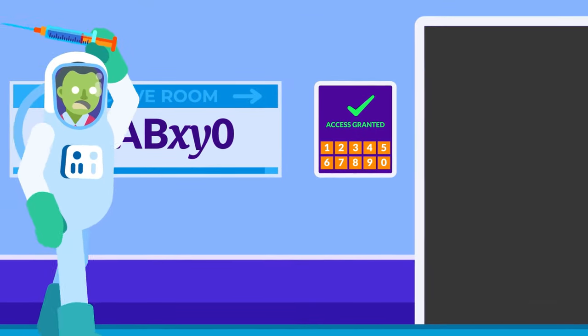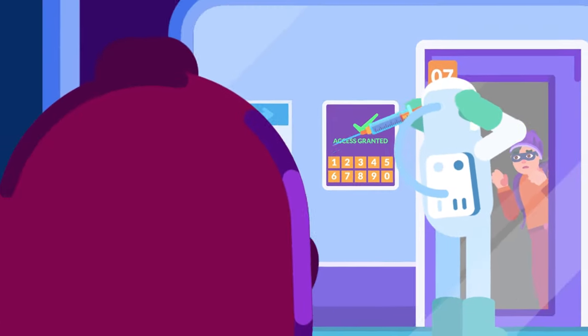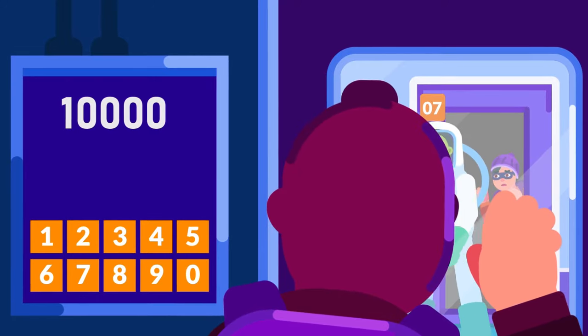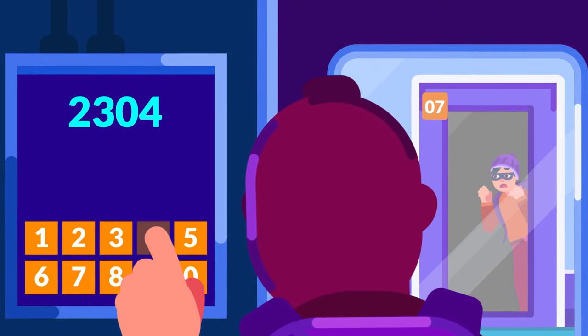Number 3: Zeros may be at times considered insignificant depending on its location and the presence of a decimal point. Any zero between two significant figures is significant. Thus, 2304 has four significant figures.